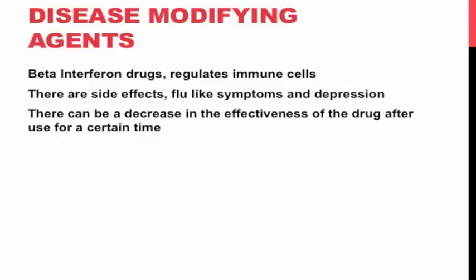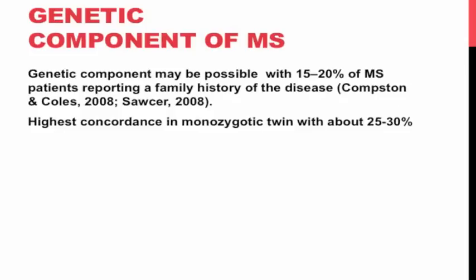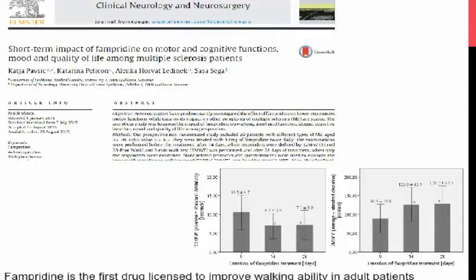One of the biggest questions today is whether there is a genetic component to MS. This may be possible, with 15 to 20% of MS patients reporting a family history of the disease, and the highest concordance found in monozygotic twins at about 20 to 35%. A lot of research is being conducted into the genetic basis of MS, its causes, and how it can potentially be cured.